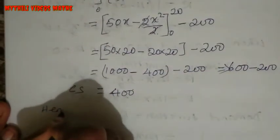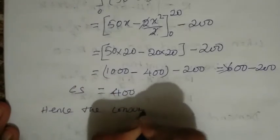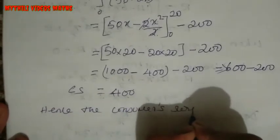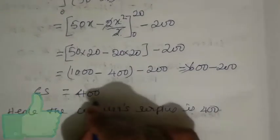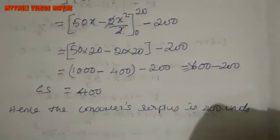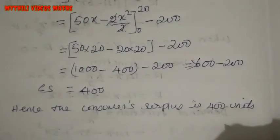Hence, the Consumer Surplus is 400 units.